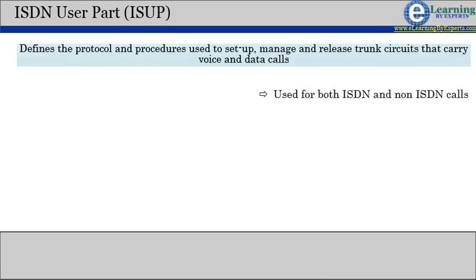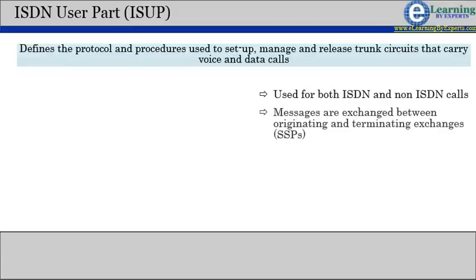ISUP is used for both ISDN and non-ISDN calls. ISUP messages are sent from a switch to the switch where the next circuit connection is required.